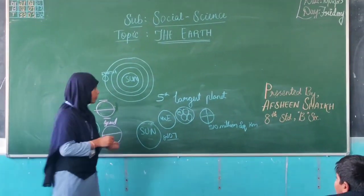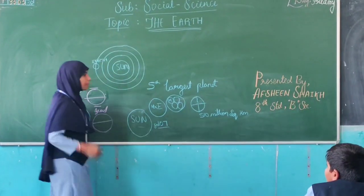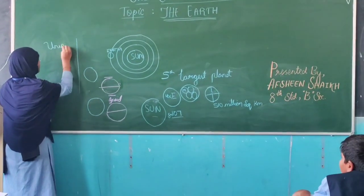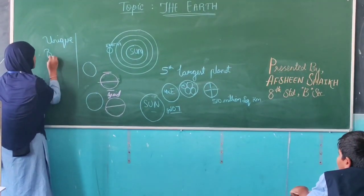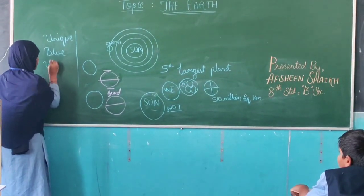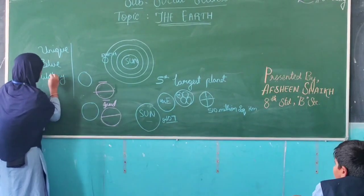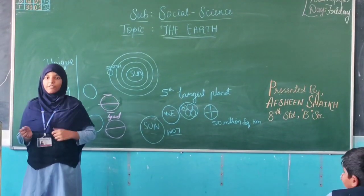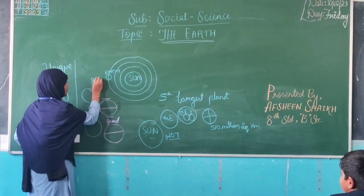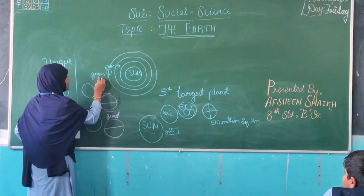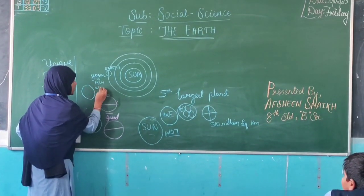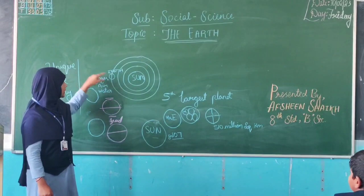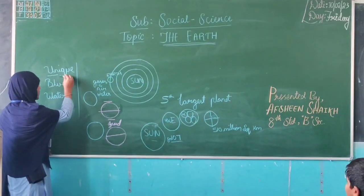Now let's look at the inner details. The Earth is also known by many other names, such as Unique Planet, Blue Planet, and Watery Planet. Why is it called Unique Planet? Because the Earth is the only planet which consists of life. Here the Earth consists of gases which make up the air, and the most necessary thing — water. The Earth has all these things, so it contains life. That's why it is called the Unique Planet.